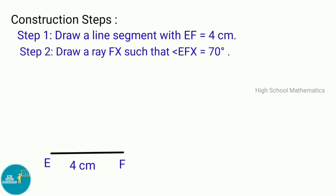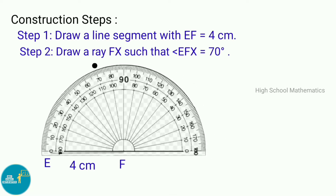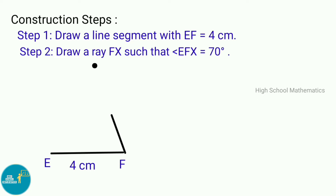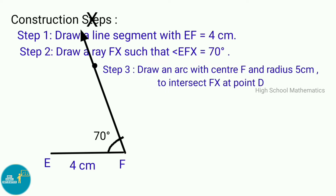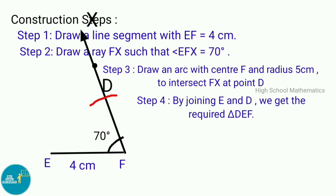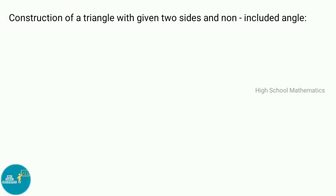Step 2: Draw a ray FX such that angle EFX equals 70 degrees. Step 3: Draw an arc with center F and radius 5 centimeters to intersect FX at point D. Step 4: By joining E and D we get the required triangle DEF.